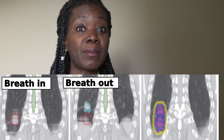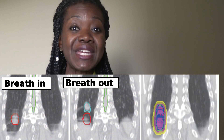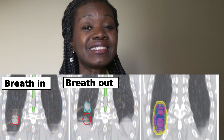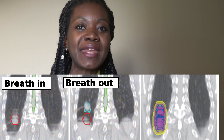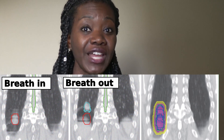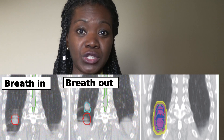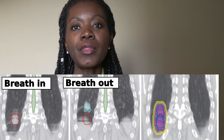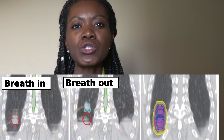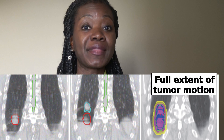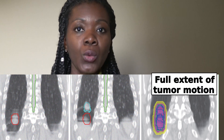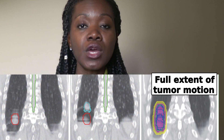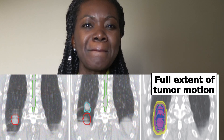This way we end up seeing the full extent of motion of the tumor in a single data set. In other words, if a patient's tumor moves while they breathe, we get a picture of the extent to which the tumor moves, so we don't miss the tumor when we try to radiate it.